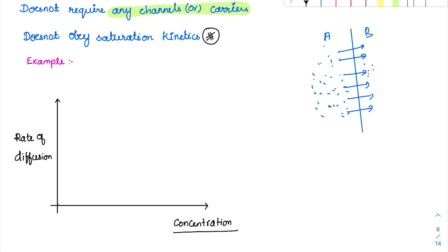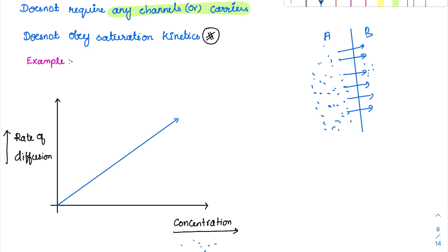There is no saturation in simple diffusion because it does not require any channels. As concentration increases on one side, the rate of diffusion also increases — more molecules shift at a faster rate. This curve is linear and non-saturating. Saturating means having a plateau or a stoppage of movement, which does not happen in simple diffusion.